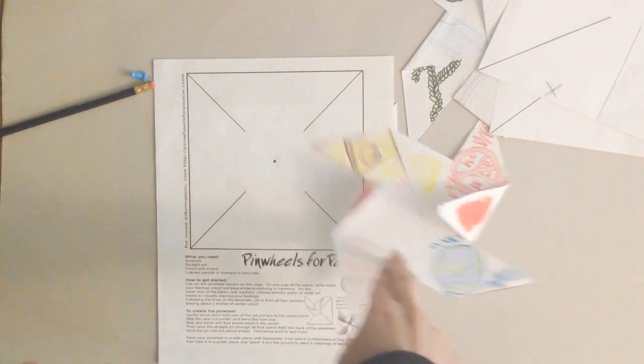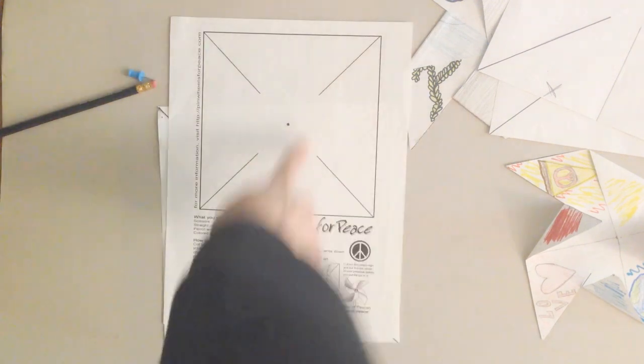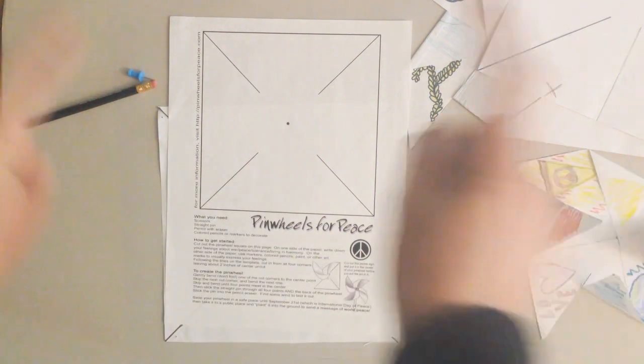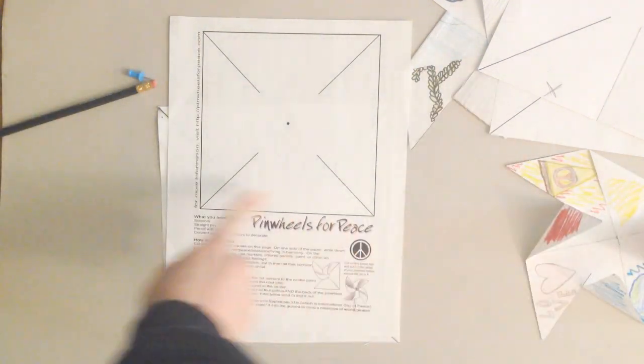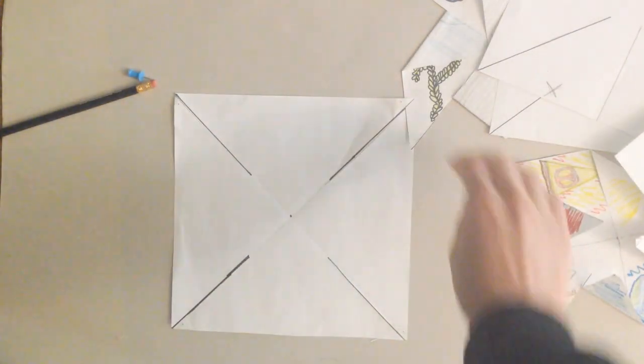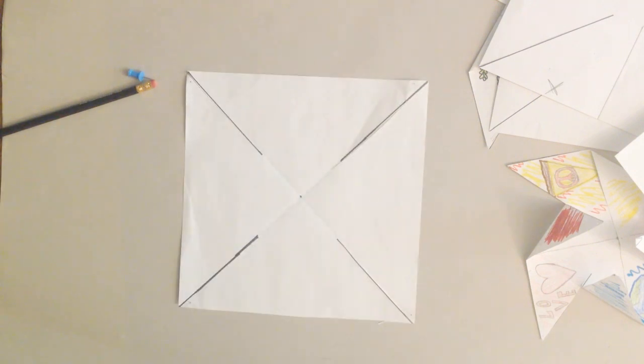So you might be making a pinwheel for Pinwheels for Peace and this is the template that you get for Pinwheels for Peace. And what you need to do is cut out the square part. So I have a pre-cut square already here that we're going to assemble into a pinwheel.